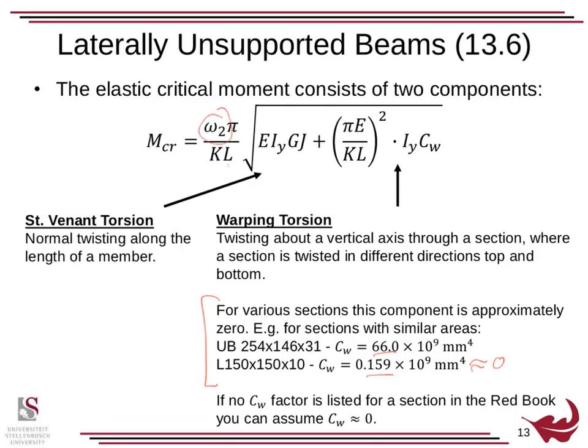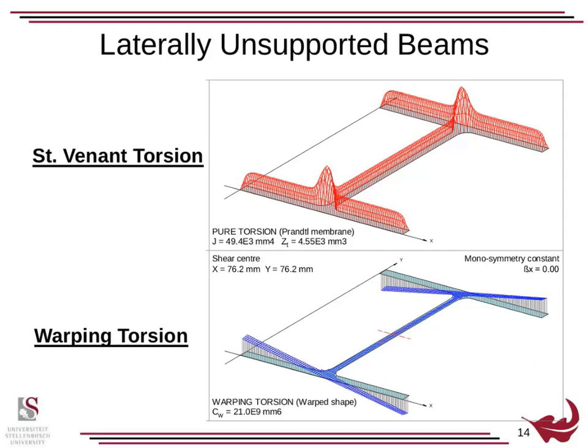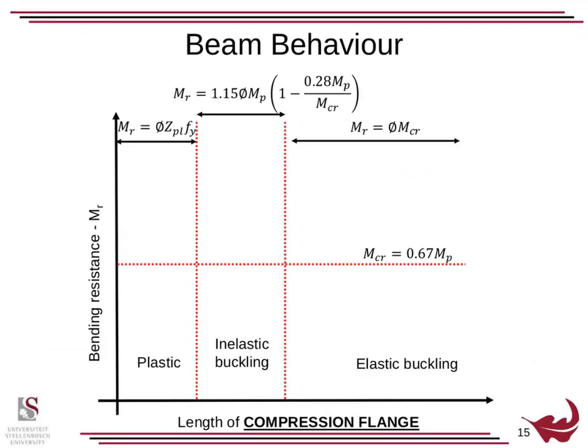Make sure you understand what omega 2 is, what the kappa value is, what the effective length is. Here's an illustration regarding St. Venant torsion: when you twist a section, that's what the stress may look like, and same thing with warping torsion.